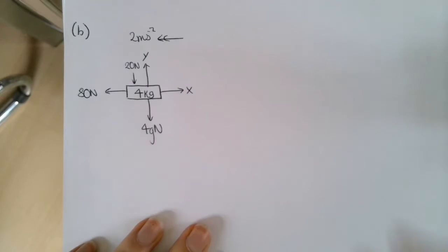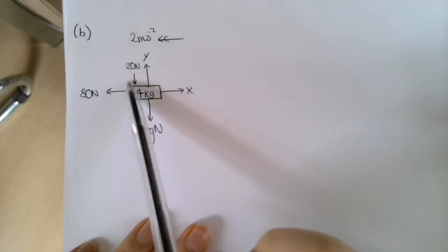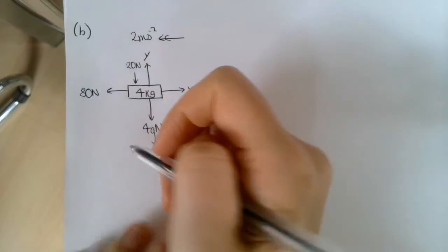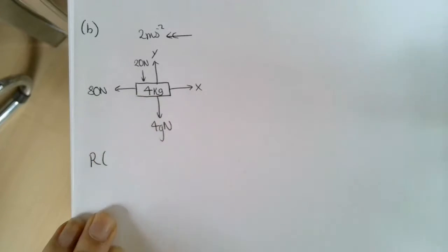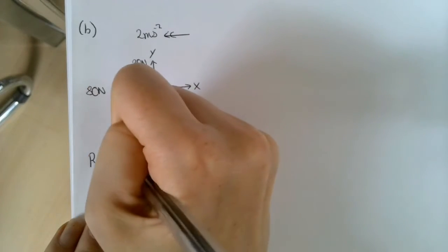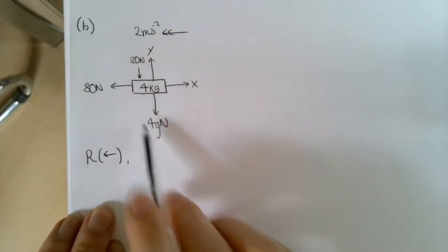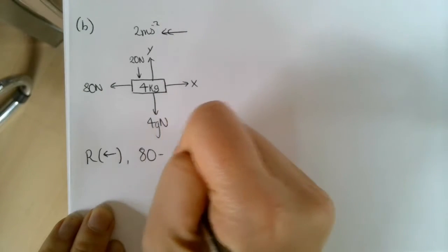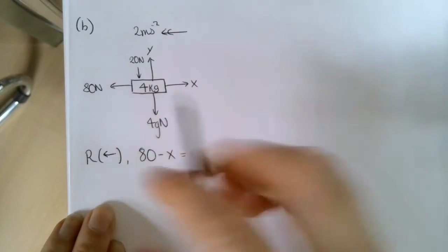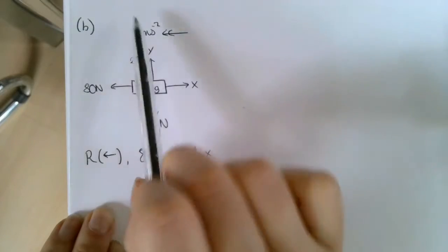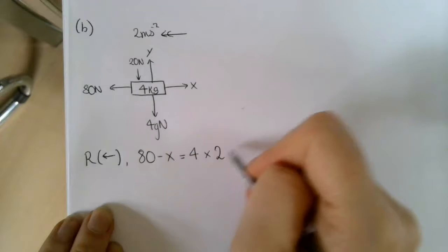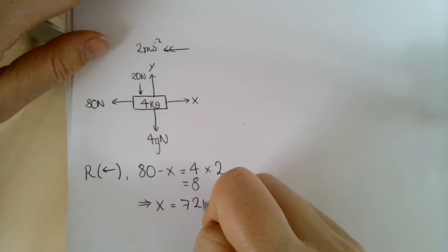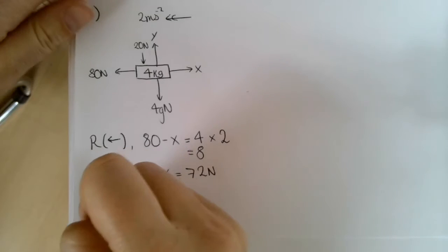For part B, we do the same process. This time we have an additional force acting downwards, and our acceleration is going in the left direction. So when resolving horizontally, I'm going to resolve in the left direction. Our resultant force is 80 subtract X, equal to mass 4 multiplied by acceleration 2. So 80 subtract X equals 8, which means X equals 72 newtons.